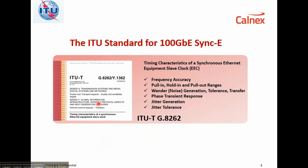Now jitter is all about standards, and the ITU standard is G.8262 for SyncE network equipment. In today's video we're focusing on jitter generation.